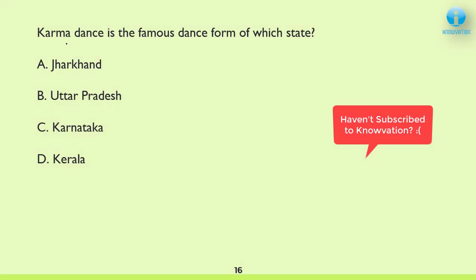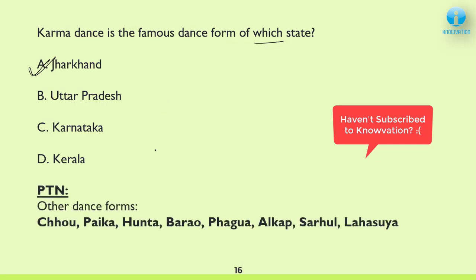Next: Karma Dance is the famous dance form of which state? The correct answer is A — Jharkhand. Other important dance forms of Jharkhand: Chow, Paika, Junta, Barow, Fagow, Alaf, Alkap, Sarhul, and Lahasuya. The importance is again in decreasing order.